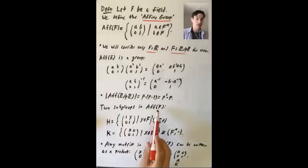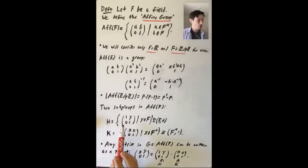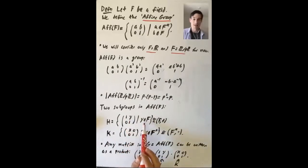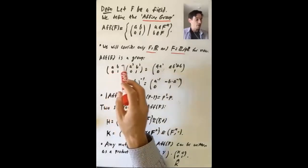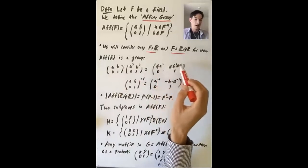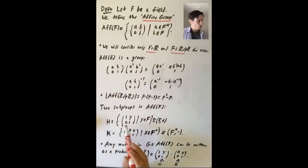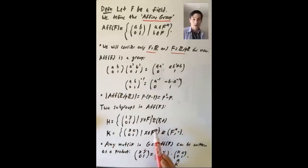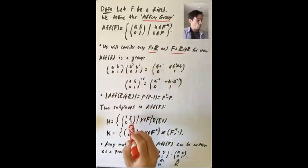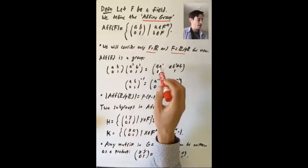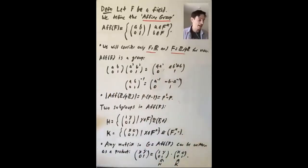Next I want to talk about two special subgroups inside this group. H is the set of all matrices [1, y; 0, 1] where y can be any element of F. It's easy to check that this is a subgroup. This subgroup is isomorphic to F as a group under addition — the additive group of this field F — because multiplying [1, y; 0, 1] times [1, y'; 0, 1] gives [1, y + y'; 0, 1], so it's just like adding the elements in the top right corner.